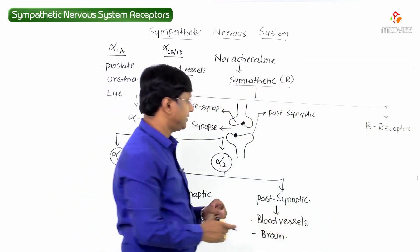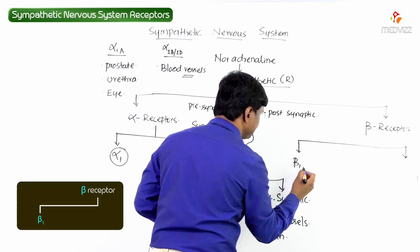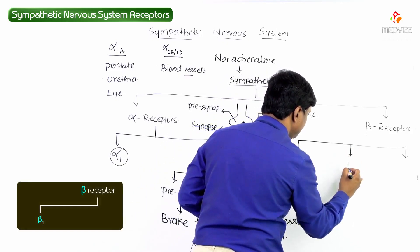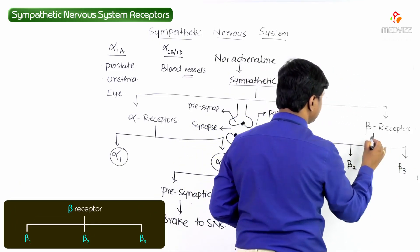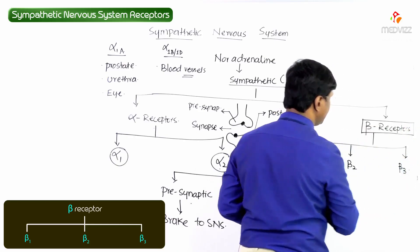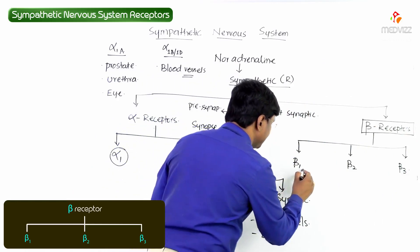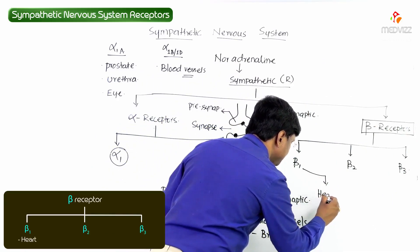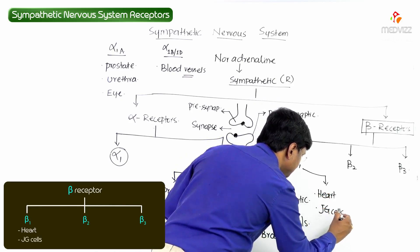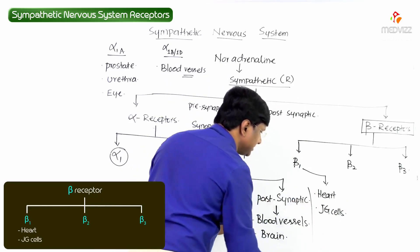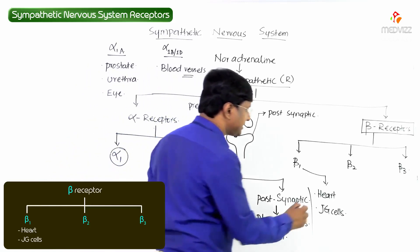Next, the beta receptors — there are three types: beta 1, beta 2, and beta 3 receptors. Beta 1 receptors are present in the heart and also in the JG cells, that is the juxtaglomerular cells of the JG apparatus within the kidney.